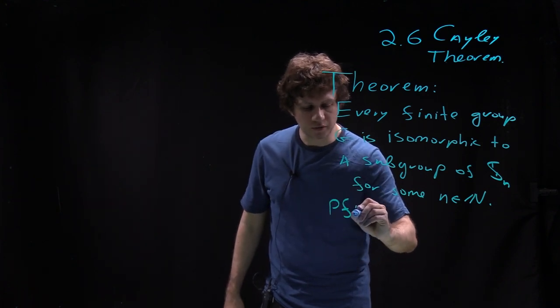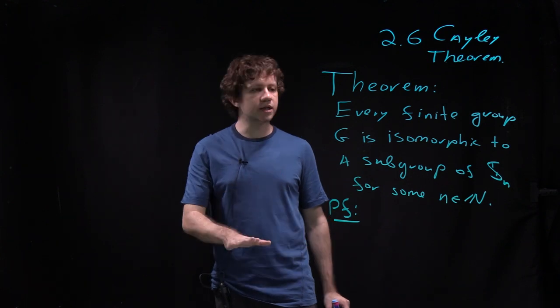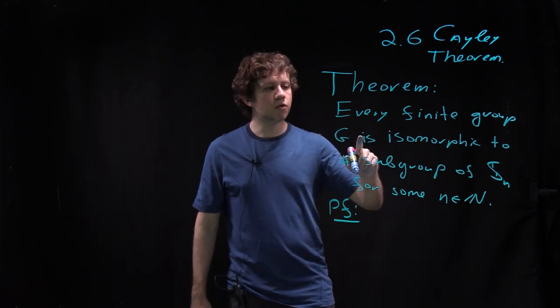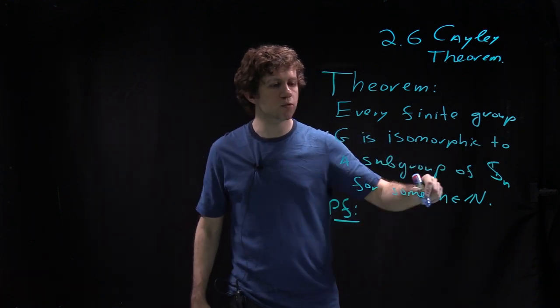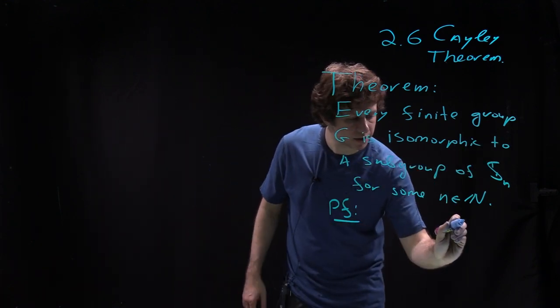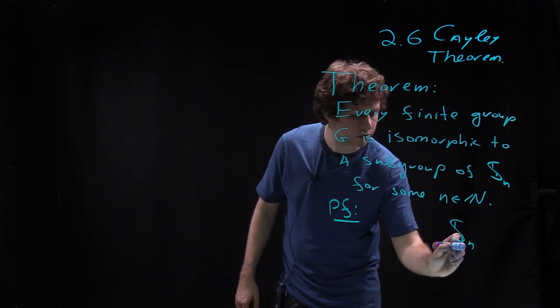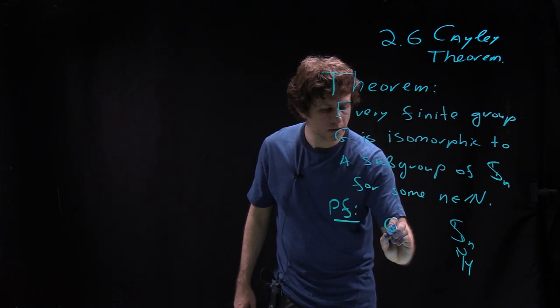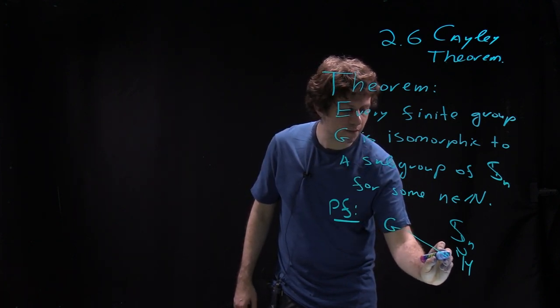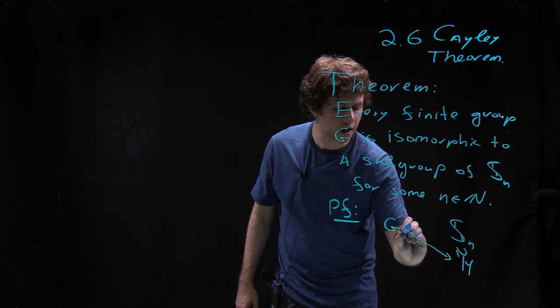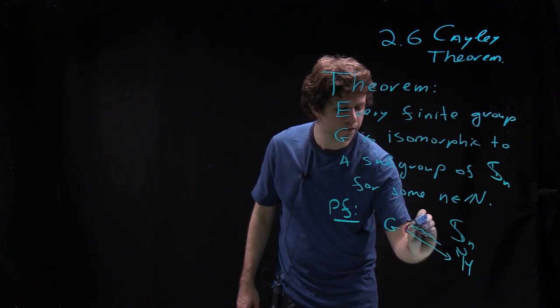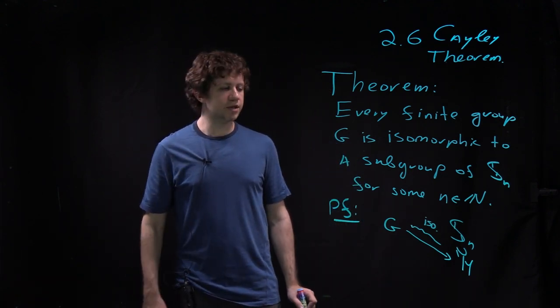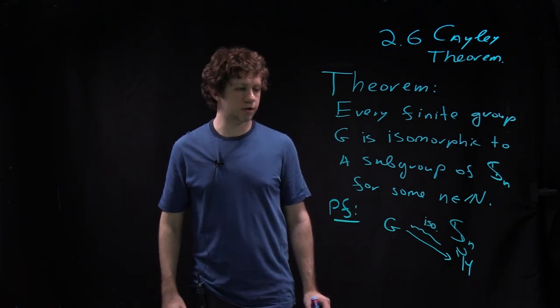Proof. So I want to start with a completely linguistic remark. G is isomorphic to a subgroup of S_n—what does that mean? It means that there is a certain subgroup of S_n, let me call it H, and then G. And then I want to construct a map from G to H, which is this isomorphism. So I can do that, but there is a slightly more convenient way to think about it.